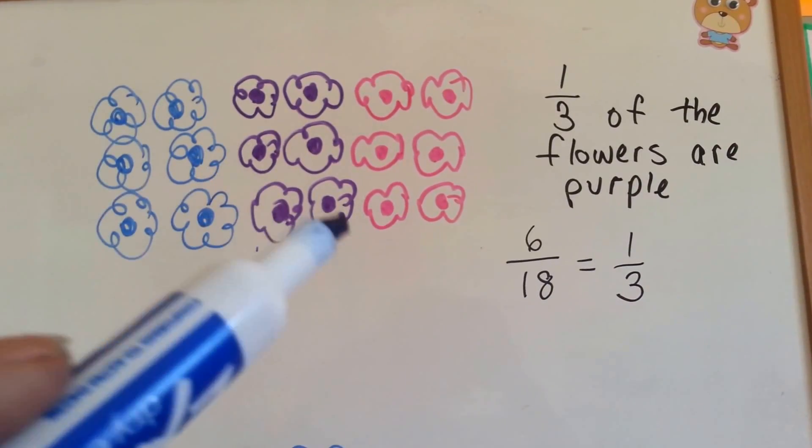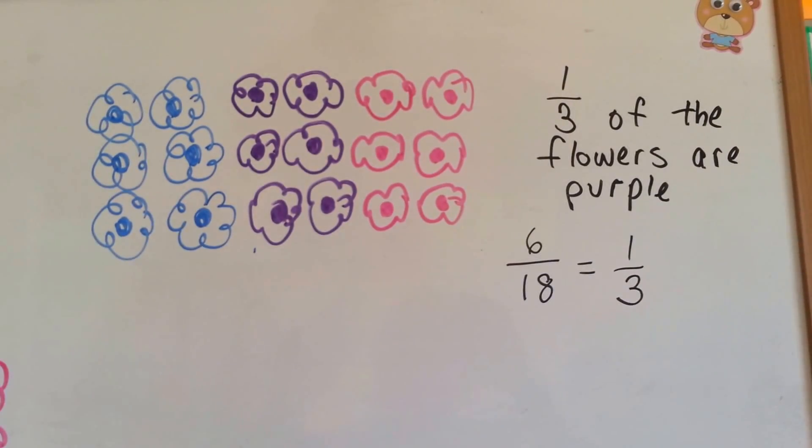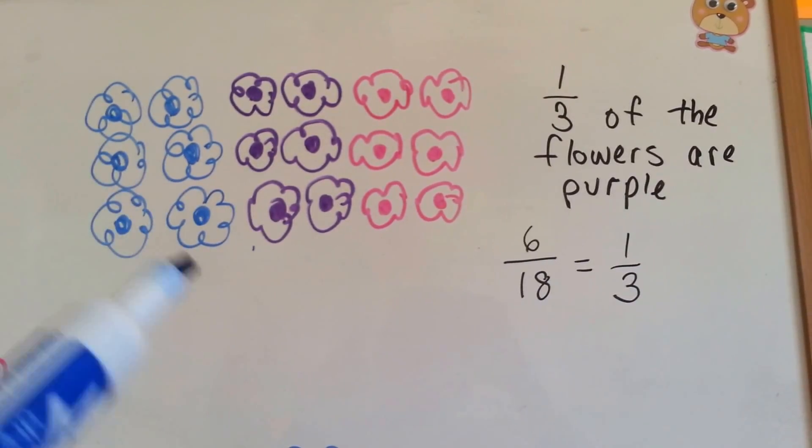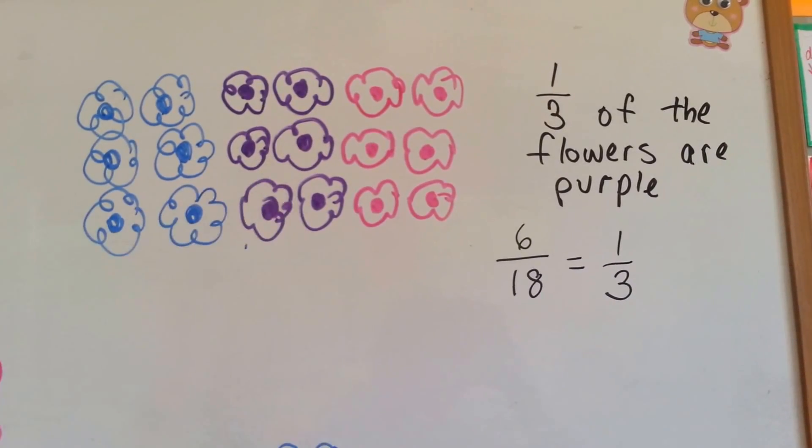There's six, seven, eight, nine, ten, eleven, twelve, thirteen, fourteen, fifteen, sixteen, seventeen, eighteen. Total of eighteen flowers, and six of them are purple. So six eighteenths are purple.